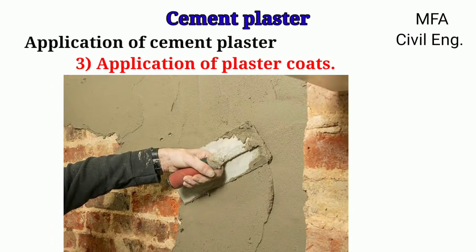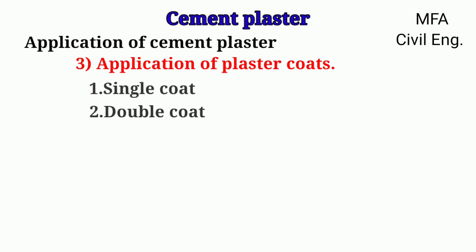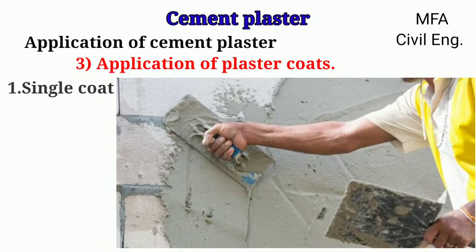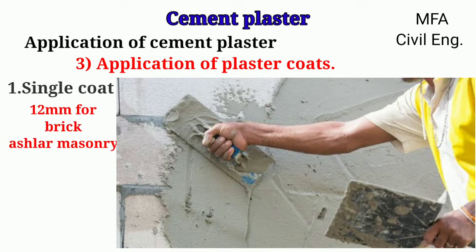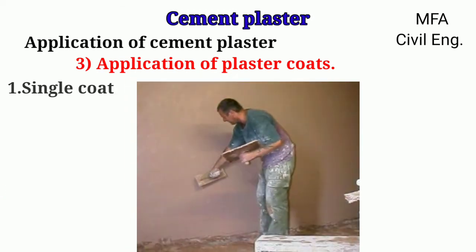The application of the plaster coat depends on the thickness to be applied on the wall surface — it may be a single coat, double coat, or narrow finishing. For single coat plaster, the average thickness of the first coat called the rough course is generally 12 mm on brick or ashlar masonry and 20 mm on rubble masonry. The first coat is generally applied by dashing against the wall surface, then sprinkled frequently with water and smoothed by means of the float.